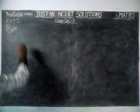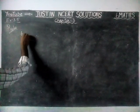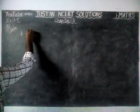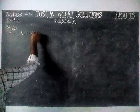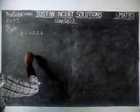Firstly, we are going to check the composite number 6. Factors of 6 are: 1, 2, 3, and 6.